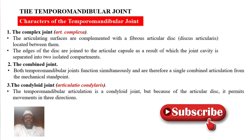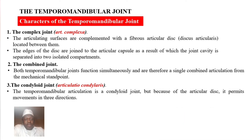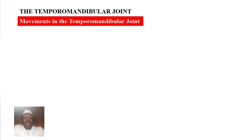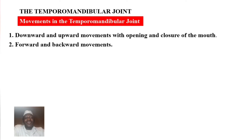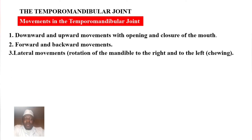It is also a condyloid joint — articulatio condylaris. Because of the articular disc, it permits movement in three directions. The first movement is downward and upward with opening and closing of the mouth. The second movement is forward and backward. The third movement is lateral — rotation of the mandible to the right and left — which takes place during chewing.